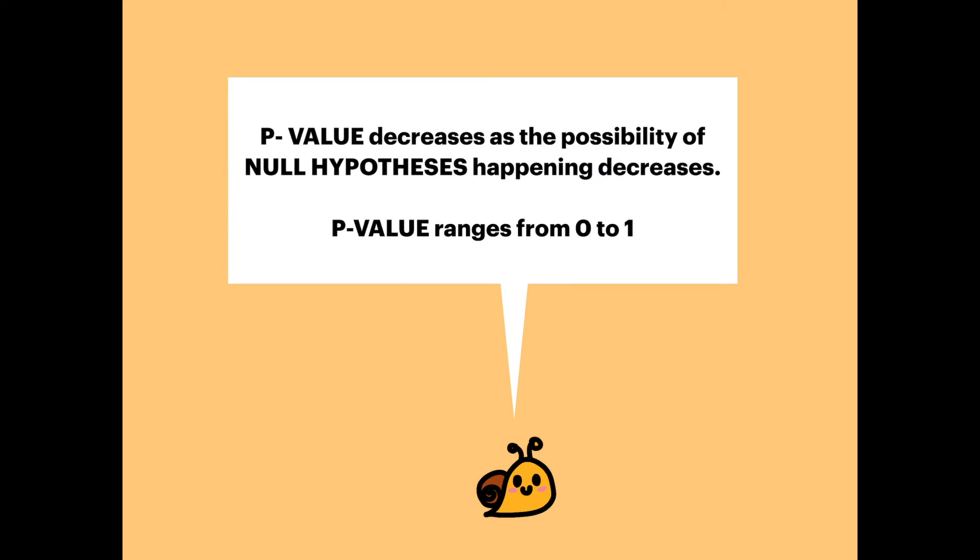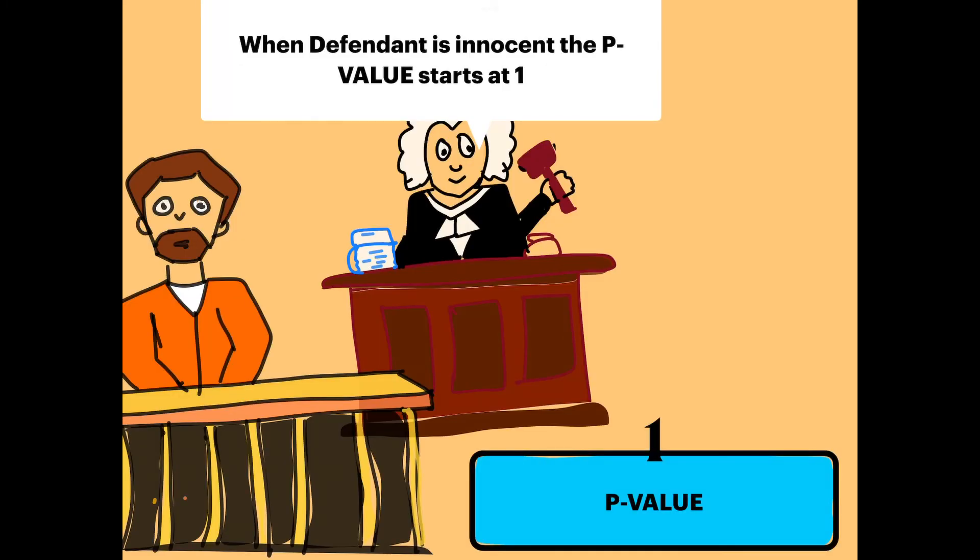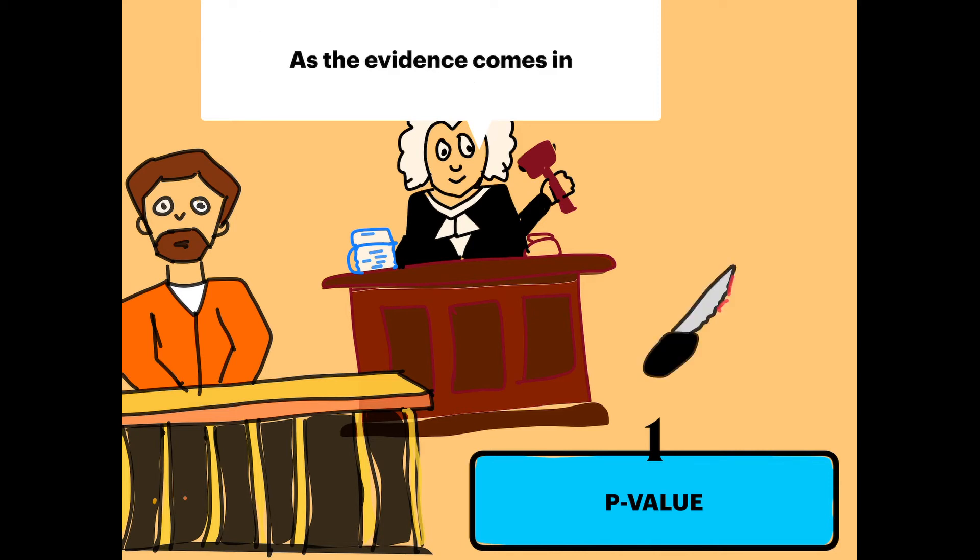The p-value decreases as the possibility of the null hypothesis happening decreases. The p-value ranges from 0 to 1. When the defendant is innocent, the p-value starts at 1. As the evidence comes in against him, the p-value decreases to 0.85, 0.75, 0.5...